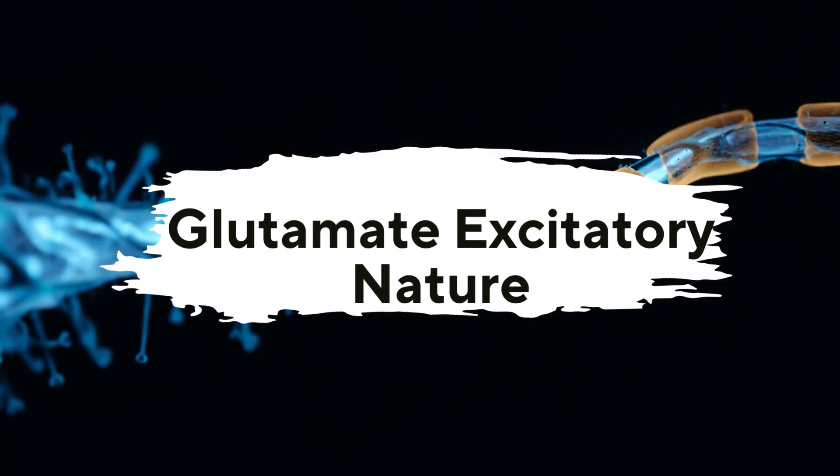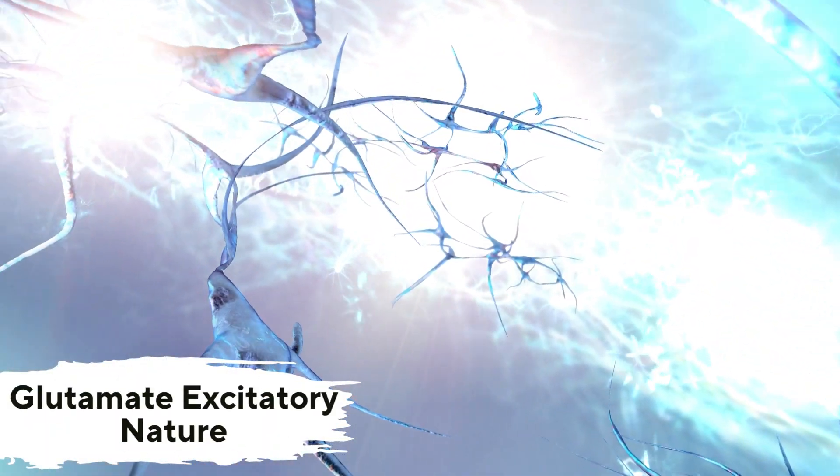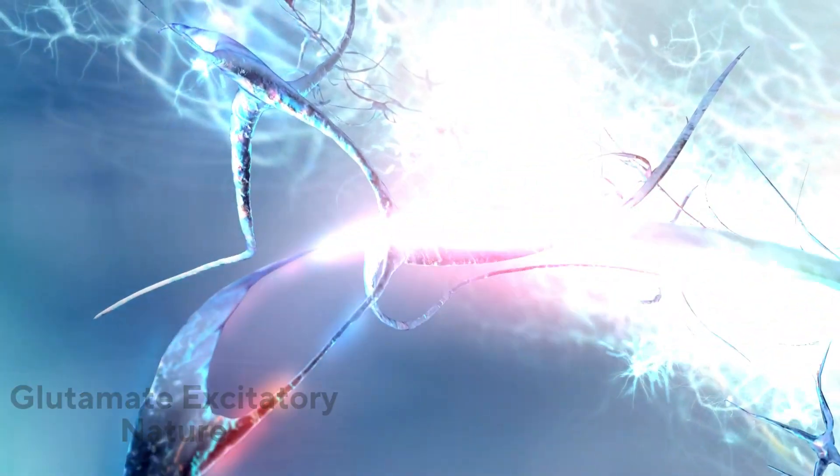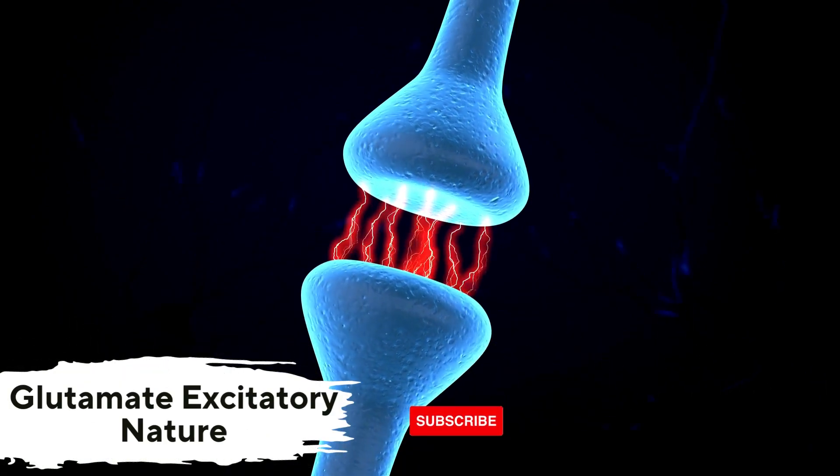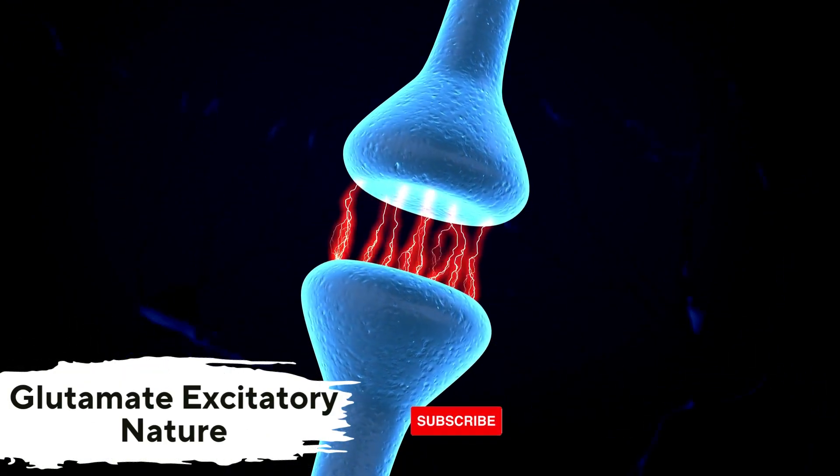Excitatory Nature. Glutamate is considered an excitatory neurotransmitter because its binding to receptors leads to the depolarization of the postsynaptic neuron's membrane. This depolarization brings the neuron closer to its threshold for generating an action potential, the electrical impulse that propagates along the neuron.